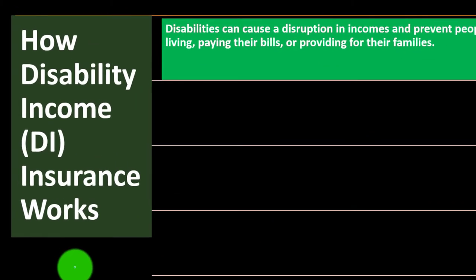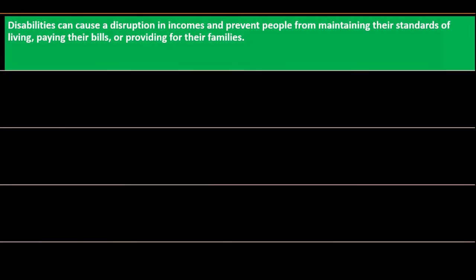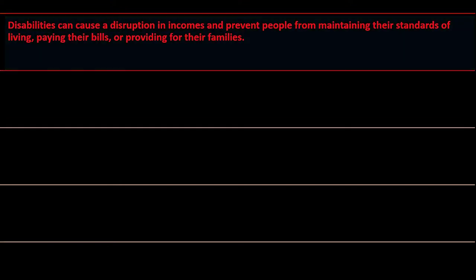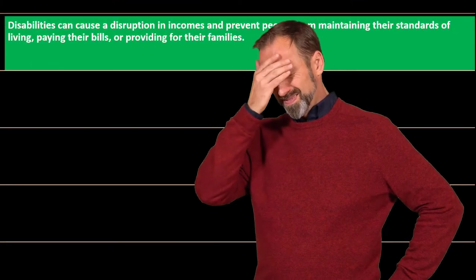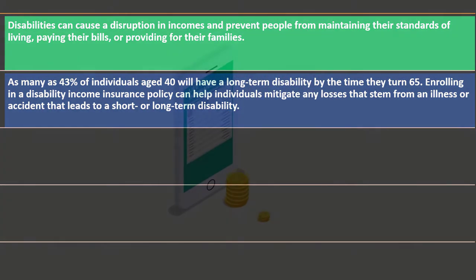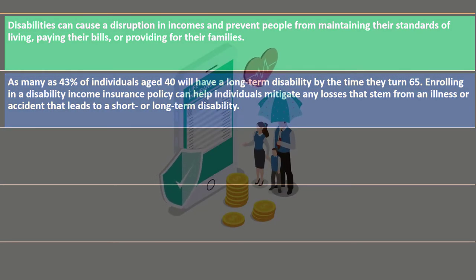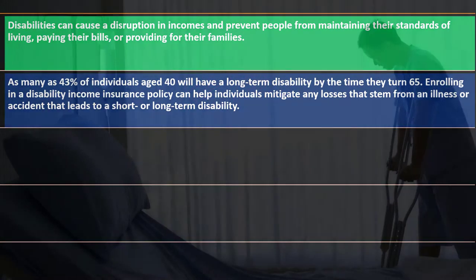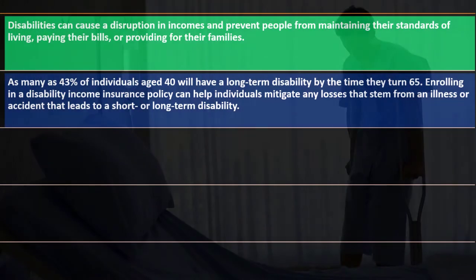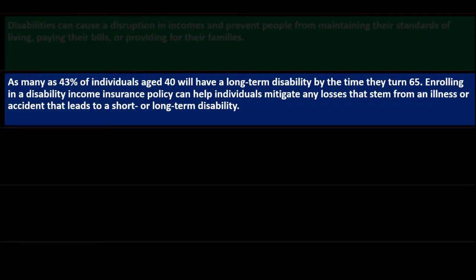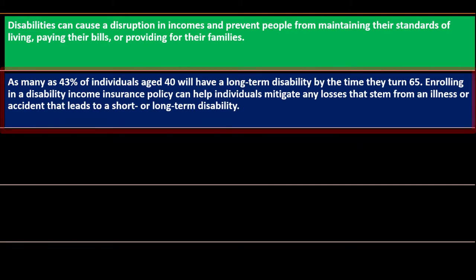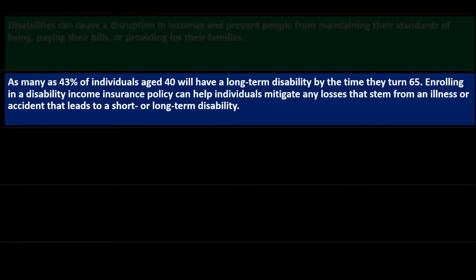Disability can cause a disruption in income and prevent people from maintaining their standards of living, paying their bills, or providing for their families — clearly a problem we would like to insure against. You can think of it like life insurance. As many as 43 percent of individuals age 40 will have a long-term disability by the time they turn 65 — that's a scary statistic. Enrolling in a disability income insurance policy can help individuals mitigate losses that stem from an illness or accident leading to a short or long-term disability.